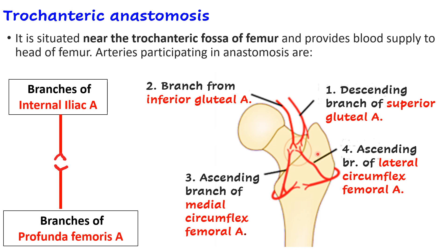This is the posterior view of the upper end of the femur showing the greater trochanter, lesser trochanter, and the depression known as the trochanteric fossa. The anastomosis is present in this region and forms the main blood supply to the head of the femur, with the ascending branches of both lateral and medial circumflex femoral arteries participating.